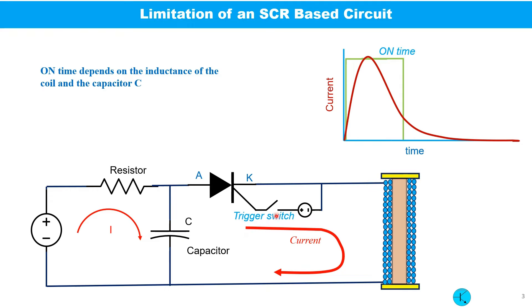This is the basic SCR switching circuit that I used previously. Once the SCR is triggered, the on time depends on the coil inductance and the value of the capacitor. However, to get maximum possible speed, we need to have a better control over the on time.